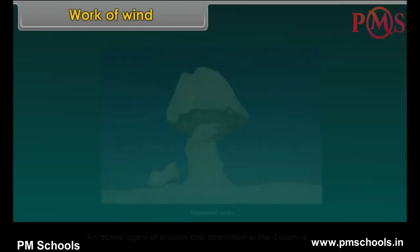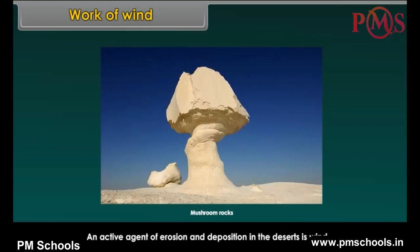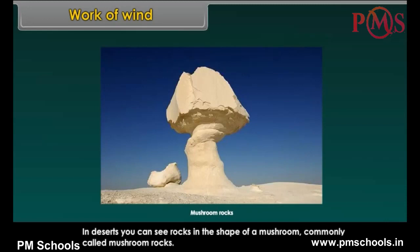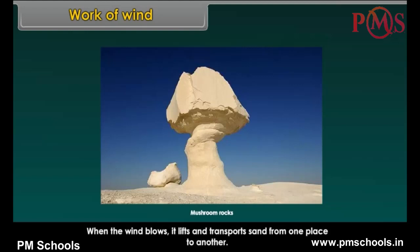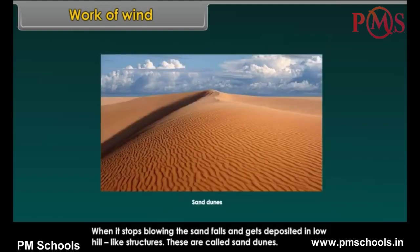Work of Wind. An active agent of erosion and deposition in the deserts is wind. In deserts, you can see rocks in the shape of a mushroom, commonly called mushroom rocks. Winds erode the lower section of the rock more than the upper part. Therefore, such rocks have a narrower base and wider top. When the wind blows, it lifts and transports sand from one place to another. When it stops blowing, the sand falls and gets deposited in low hill-like structures.